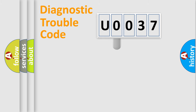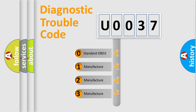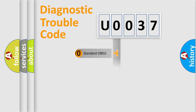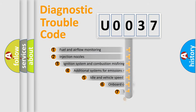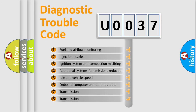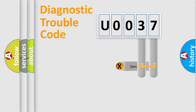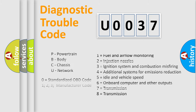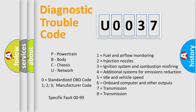This distribution is defined in the first character of the code. If the second character is expressed as zero, it is a standardized error. In the case of numbers 1, 2, or 3, it is a manufacturer-specific error. The third character specifies a subset of errors. The distribution shown is valid only for the standardized DTC code, and only the last two characters define the specific fault of the group.